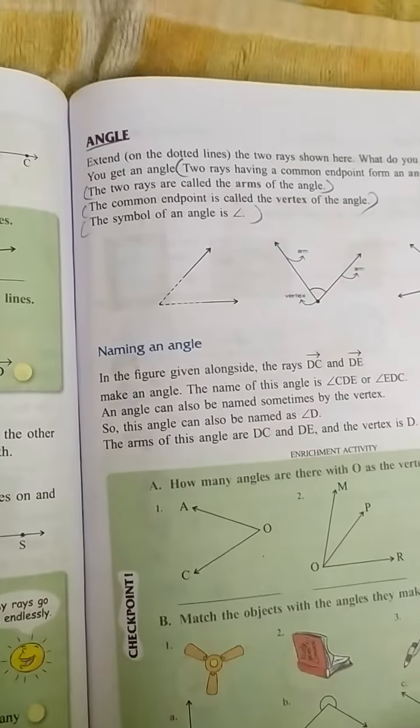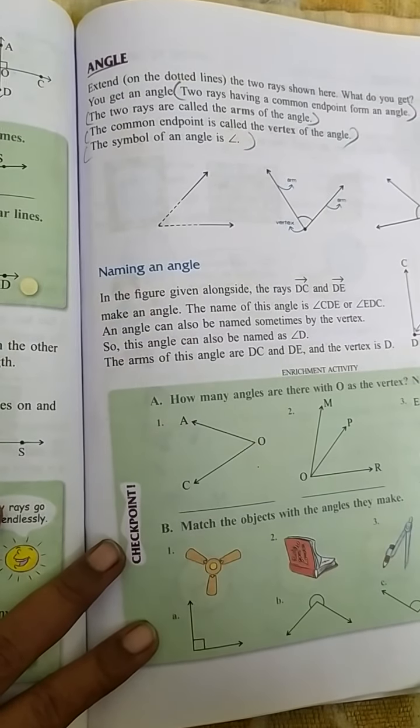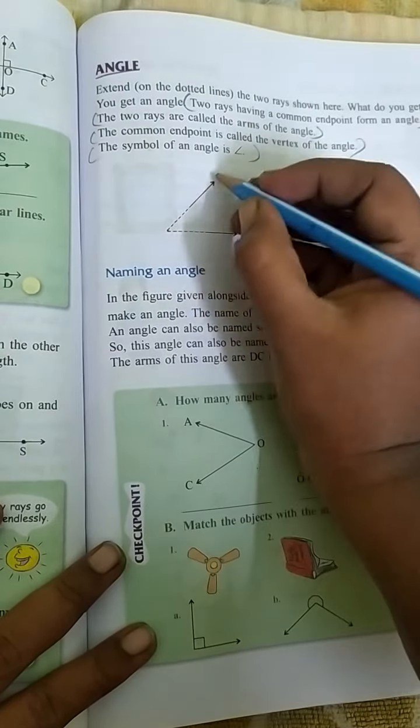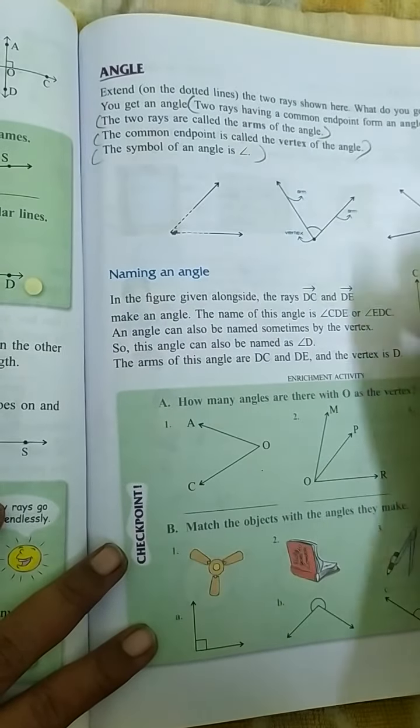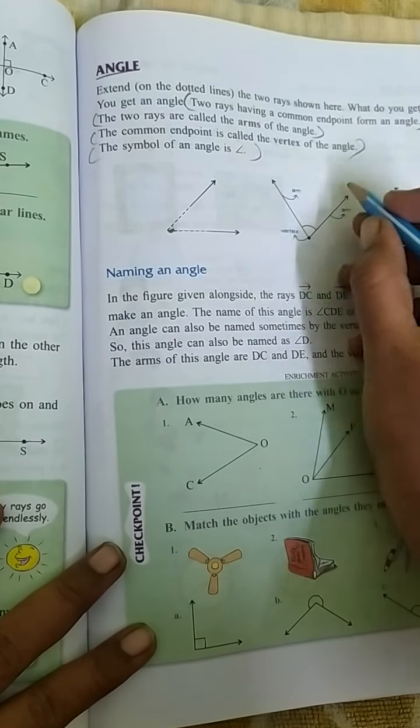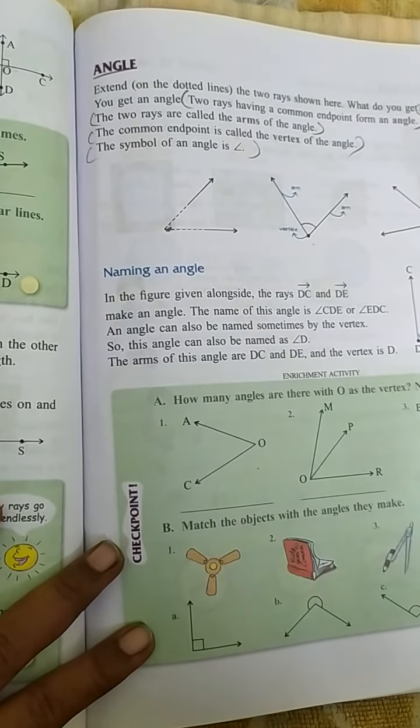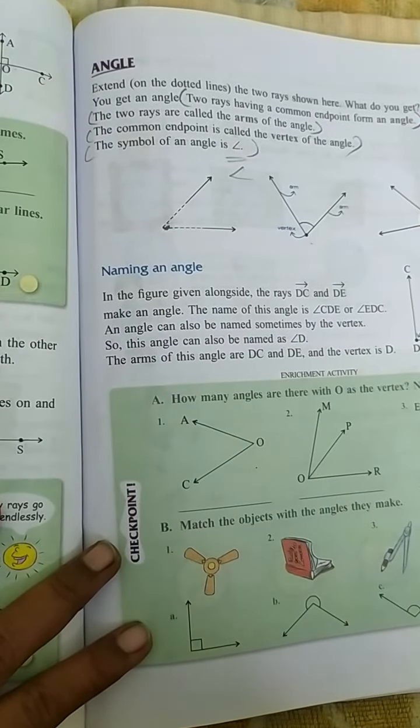Next topic is angle. What do you mean by an angle? When two rays meet at a common point, we call it a vertex. That common point we call the vertex. And the two lines we call an arm. We denote it by a symbol like this, a crocodile mouth symbol.